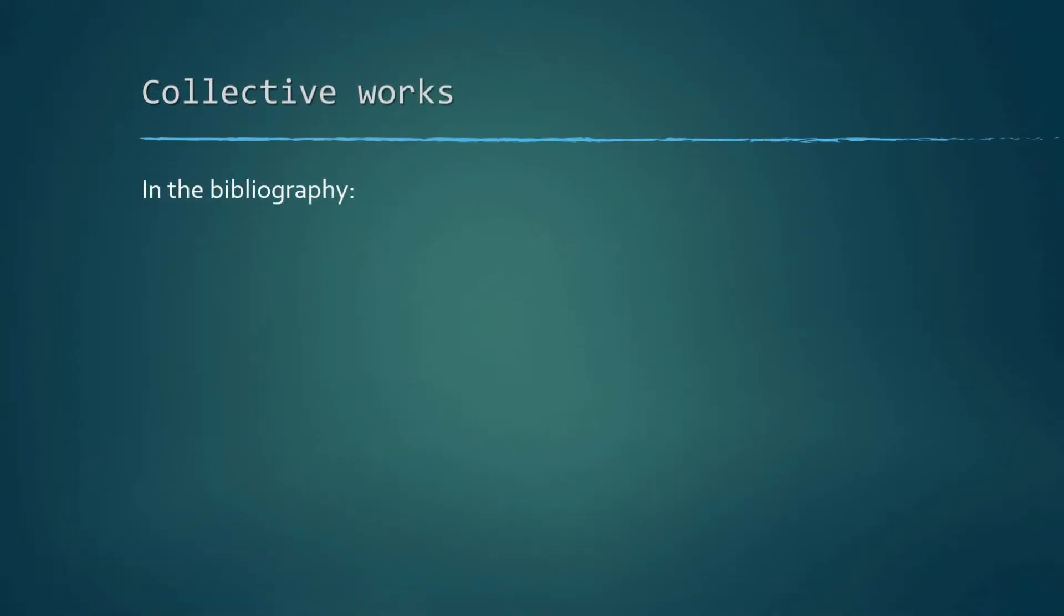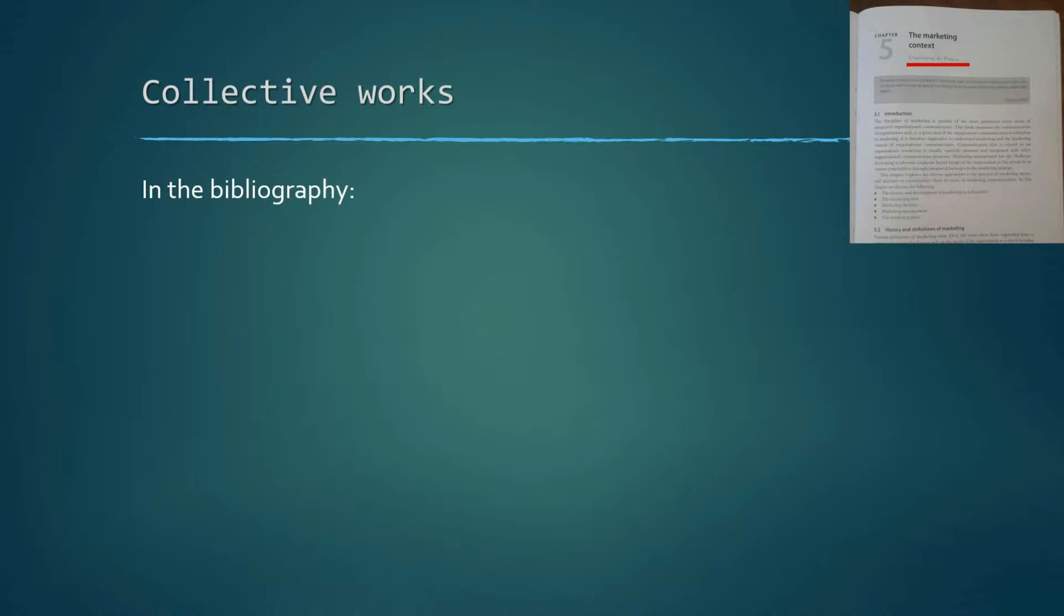The reference in the bibliography will have a full and complete reference to this work. We start off with the surname of the author, that is to say, the author of the specific chapter, followed by a comma and then the author's initial and a full stop. As you can see, the same style rules as outlined in the previous video still applies.